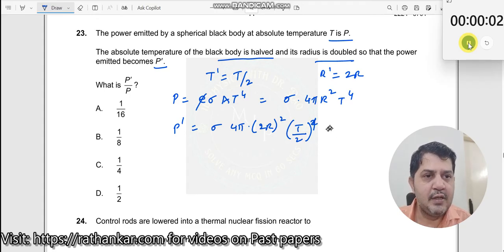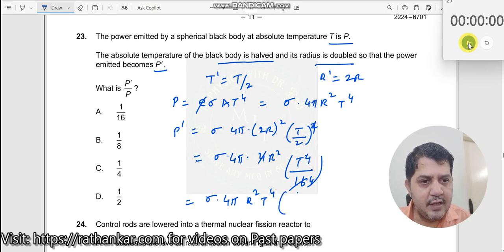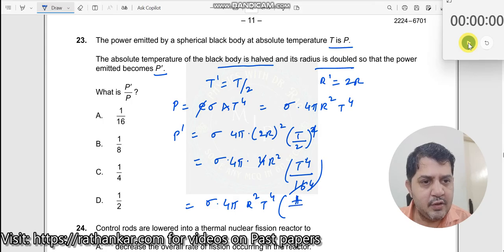This equals sigma times 4 pi times 4 R squared times T to the power 4 divided by 16. Simplifying, this equals sigma times 4 pi times R squared times T to the power 4 times 1 by 4.